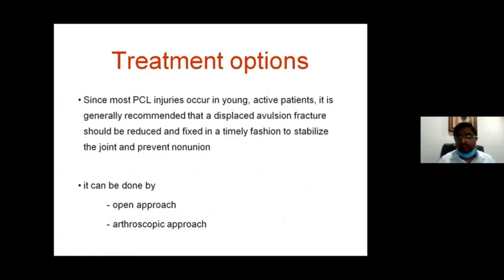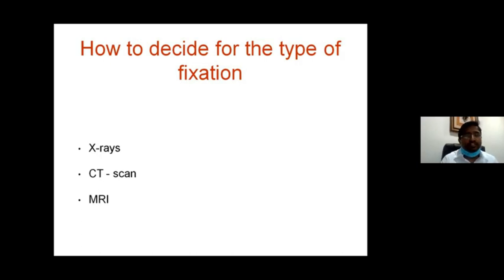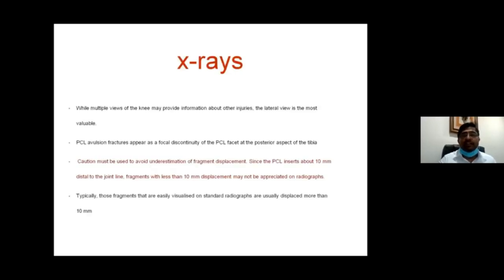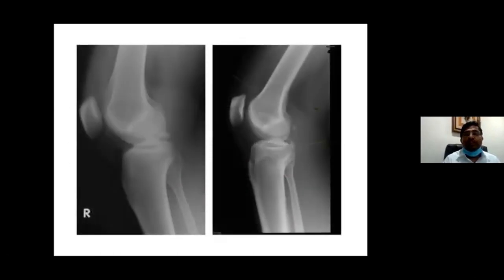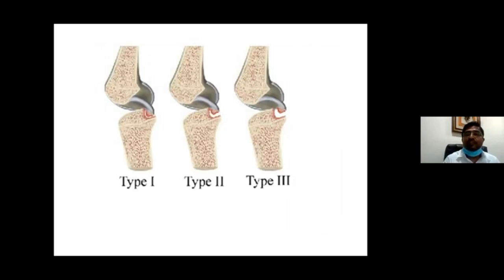The two treatment options are open procedure or arthroscopic procedure. An open procedure is done when there is a good, large chunk of bone, while arthroscopic fixation allows early rehabilitation and less morbidity. On X-ray, the avulsion should be more than 10 mm displaced to be visible on the lateral view; otherwise it is likely an undisplaced fracture.